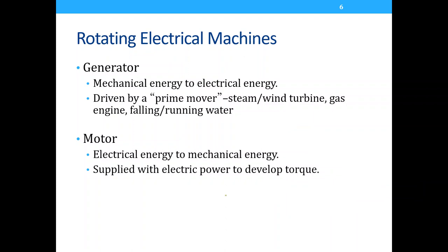Generators convert mechanical energy to electrical energy and are driven by a prime mover — such as steam, a wind turbine, a gas engine, or falling and running water. You see this in power plants where generators produce electricity and bring it to your home.